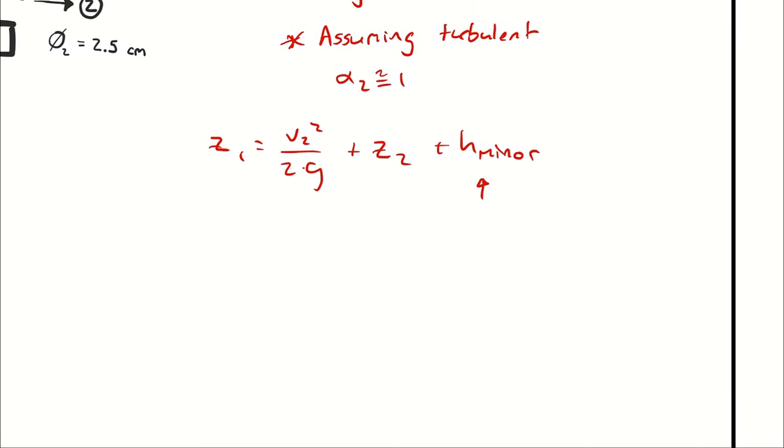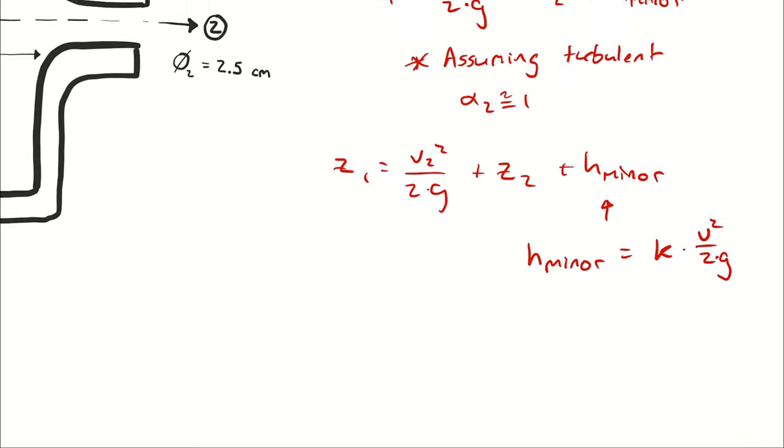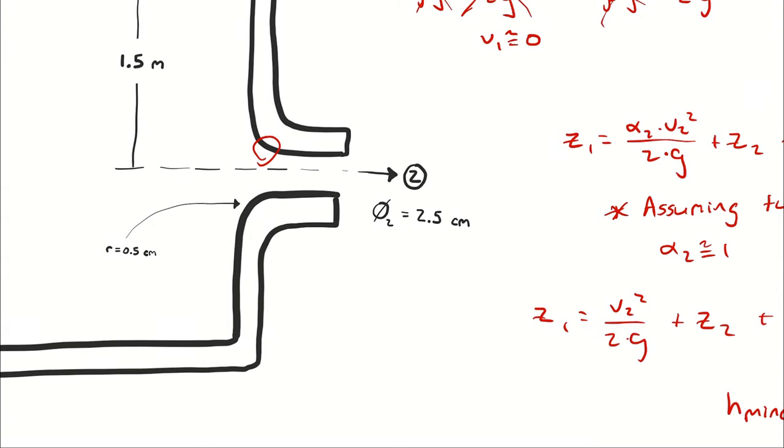Next, I will make my substitution for my calculation for the minor losses. So the velocity in that equation is the velocity through that interface itself. Here, I'm going to call that velocity essentially the same as v2, because at the point of the round transition, the velocity is relatively close to the velocity at state 2.